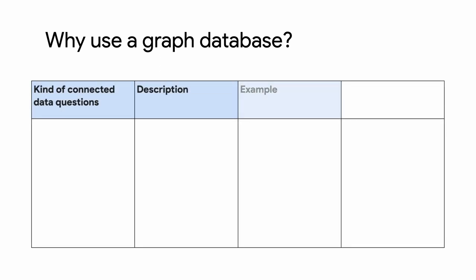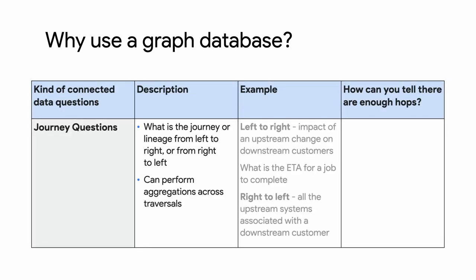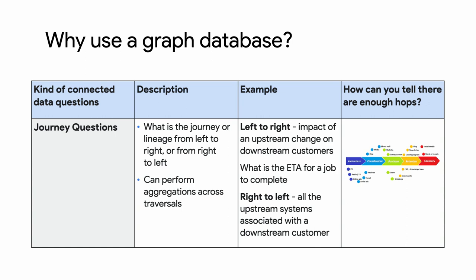One of those problems relates to journey questions — things like lineage. One very obvious example is tracing something through a supply chain. If we're talking about food, where it's farmed, to where it's wholesaled, to where it's sold, to your dinner plate. We do many use cases like that with shipping and logistics companies.